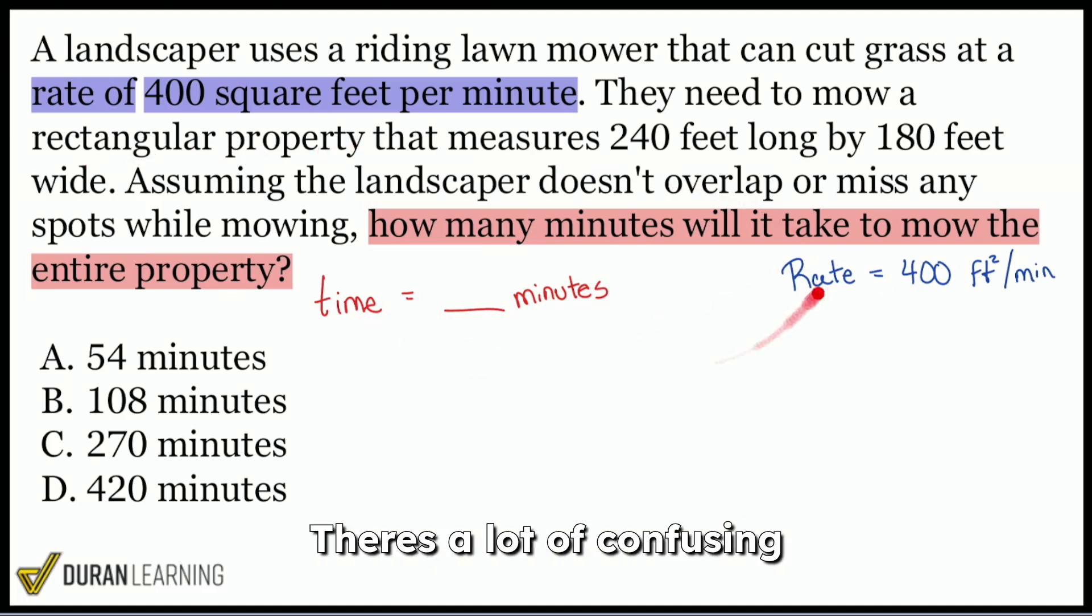Right? There's a lot of confusing stuff happening here. But that's because this question blends two ideas. It's going to be blending distance rate time and area. Those are the two key concepts that we're going to be blending together.